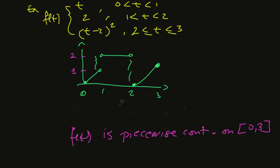Think about a piecewise function defined over several intervals. If you see a sketch where the function is continuous on each piece and you have jump discontinuities, but the left-hand and right-hand limits at each jump are finite numbers, then you can say it is piecewise continuous on that interval.